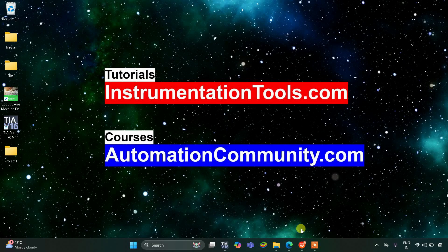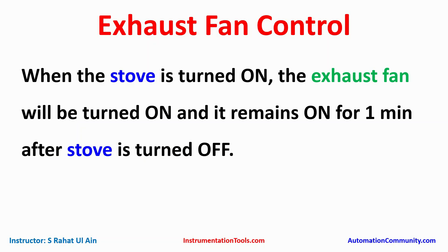Hello everyone, welcome to Automation Community. Today in this video we are going to discuss an example about an industrial exhaust fan. The example is exhaust fan control: when the stove is turned on, the exhaust fan will be turned on, and it remains on for one minute after the stove is turned off.